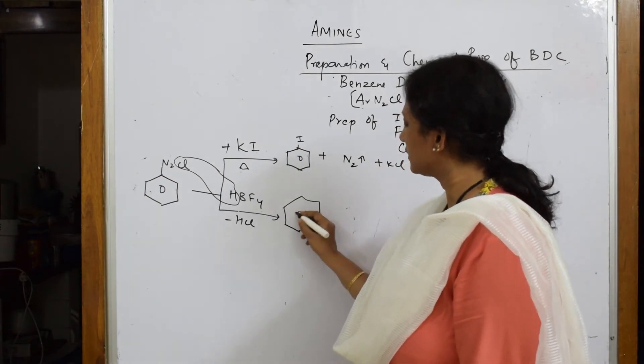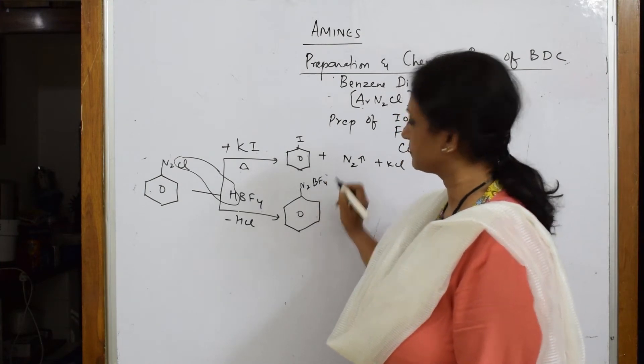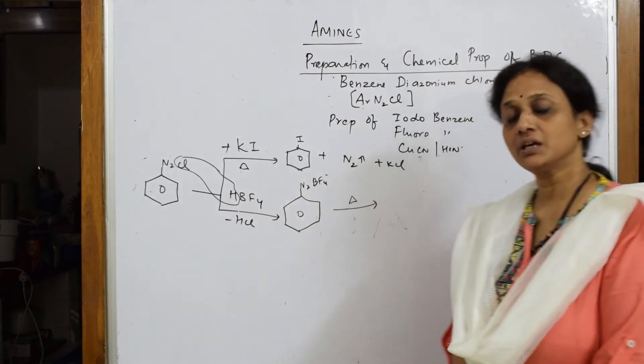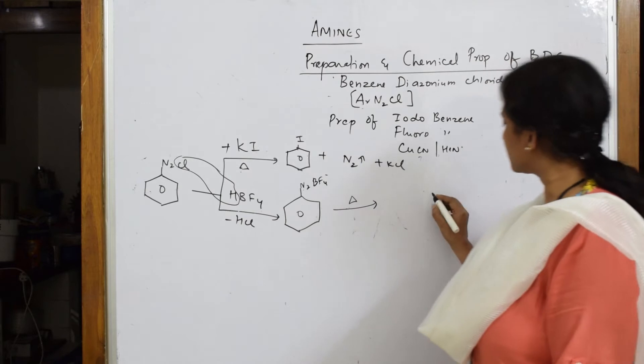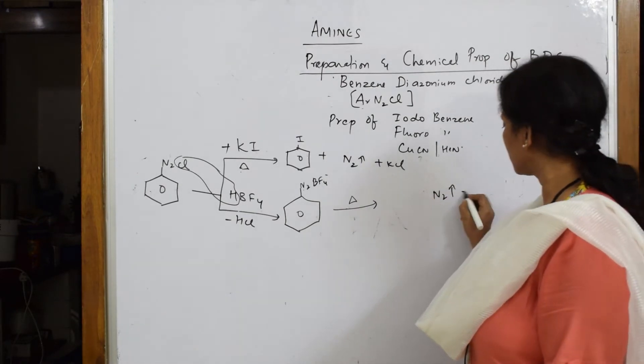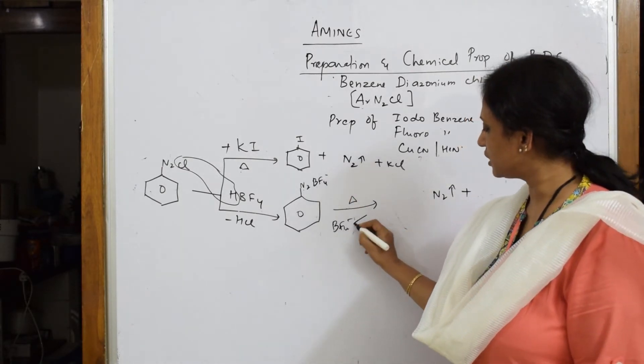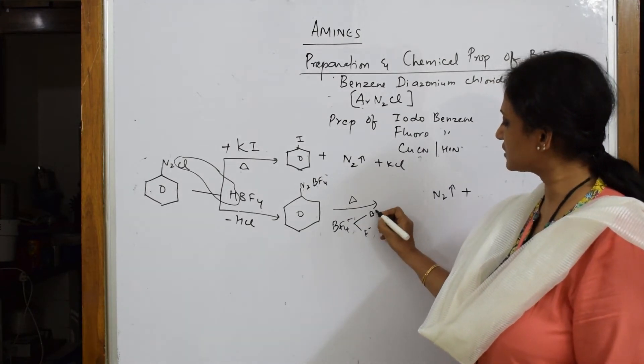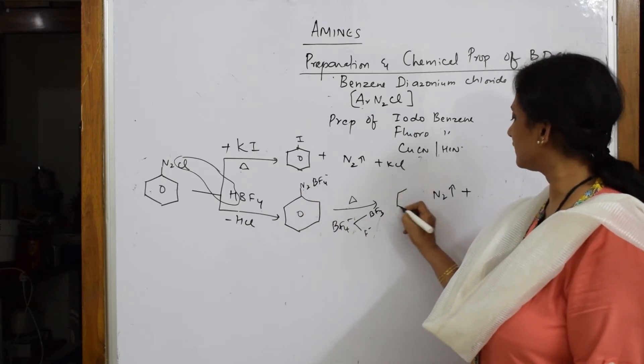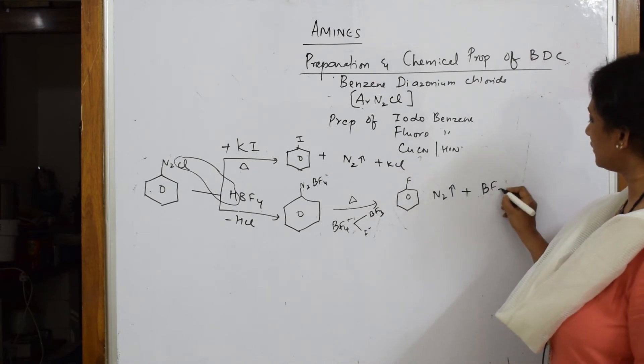Let us write the product first. You have N2BF4 minus. If you are further heating it, immediately the nitrogen gas escapes out. Plus, your BF4 is going to dissociate into two ions. One is F minus and next one is BF3. This F minus is still existing there.